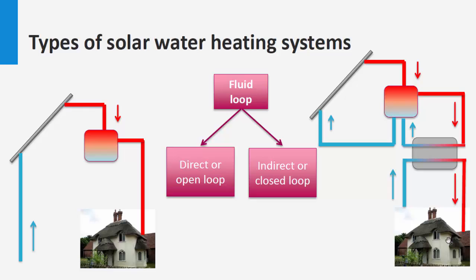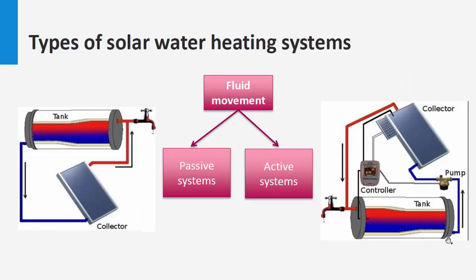The second method is based on the movement of fluid: passive system or active system. The passive solar water heating system uses natural convection to transfer the fluid from the collector to storage. This happens because the density of the fluid drops when the temperature increases.